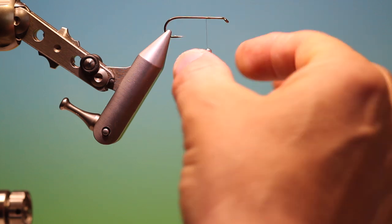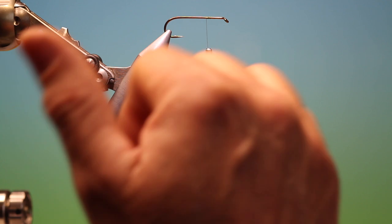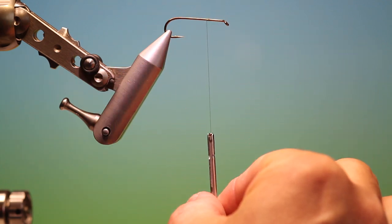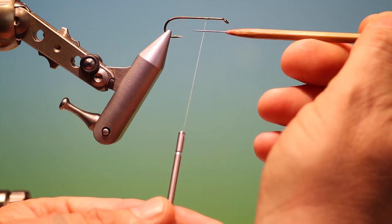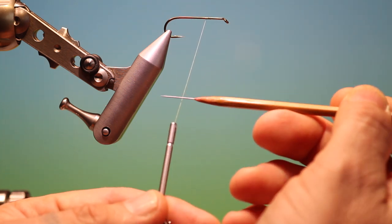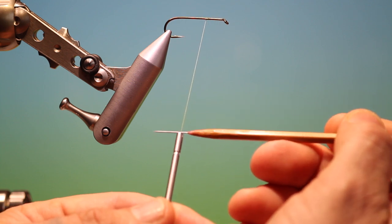Now we want to make the loop approximately the size that we need for the dubbing. You don't want a great distance from the hook shank to where the dubbing starts, and you don't want a great distance from where the dubbing finishes to the spinner.